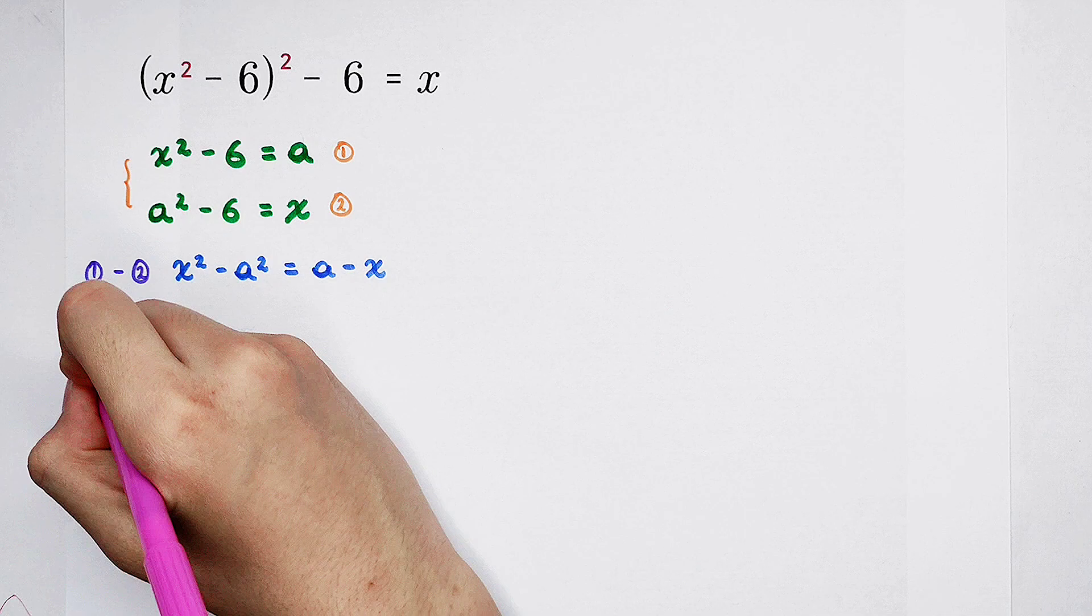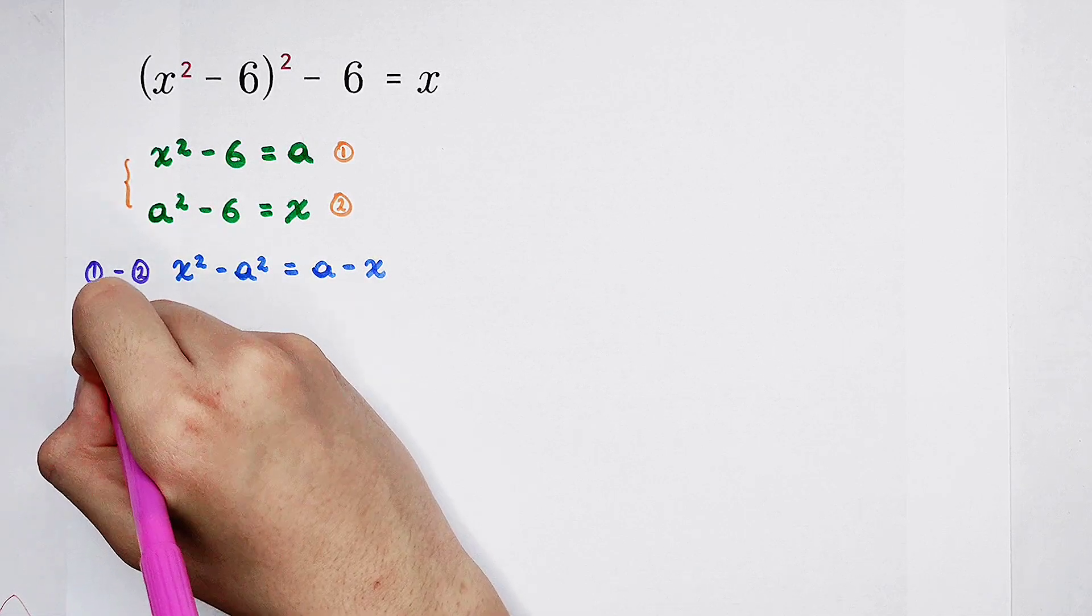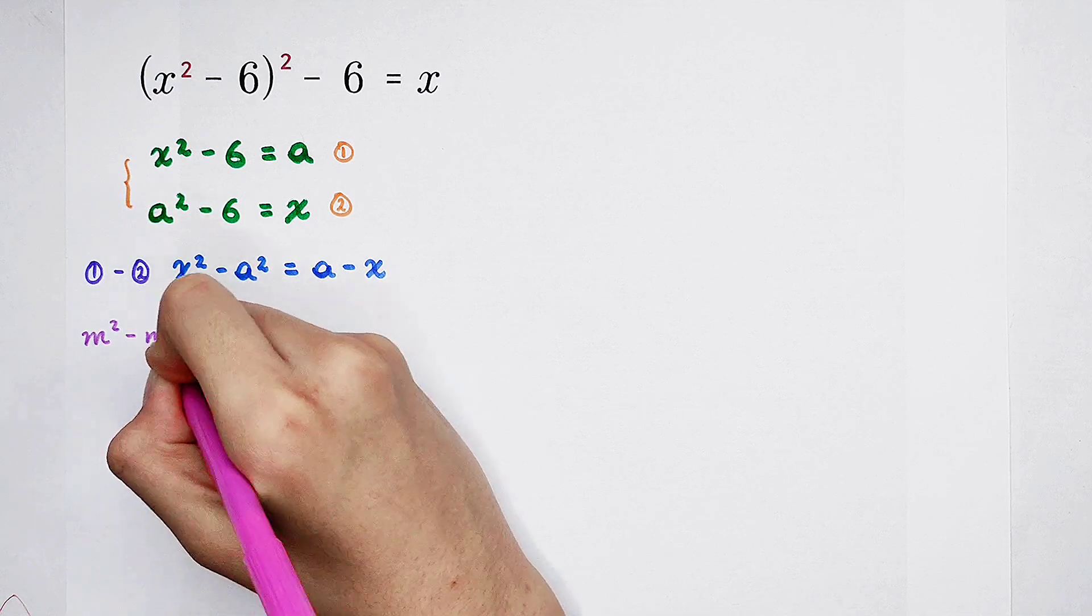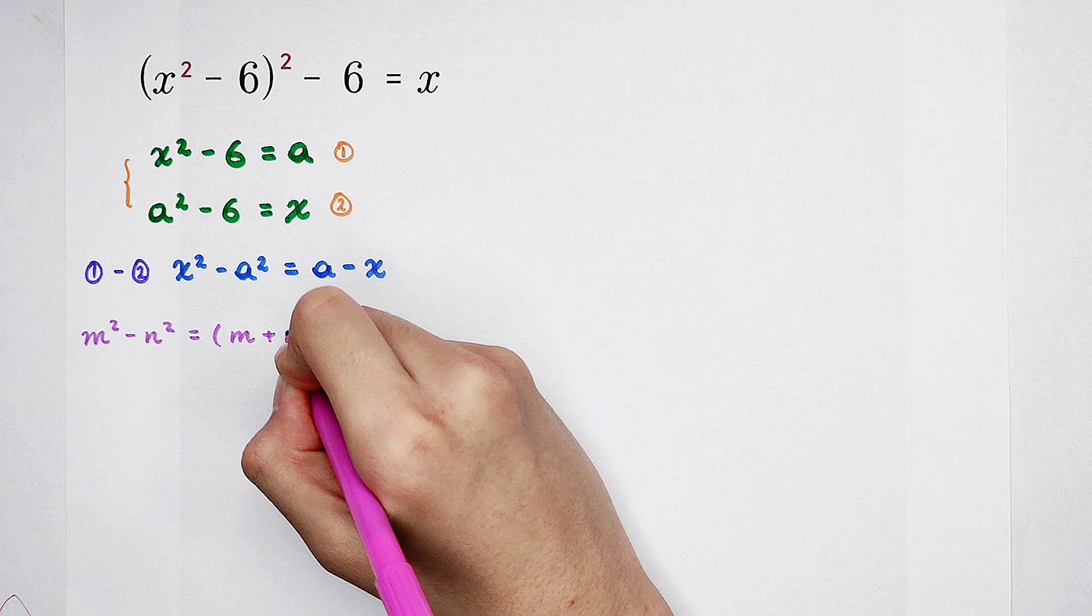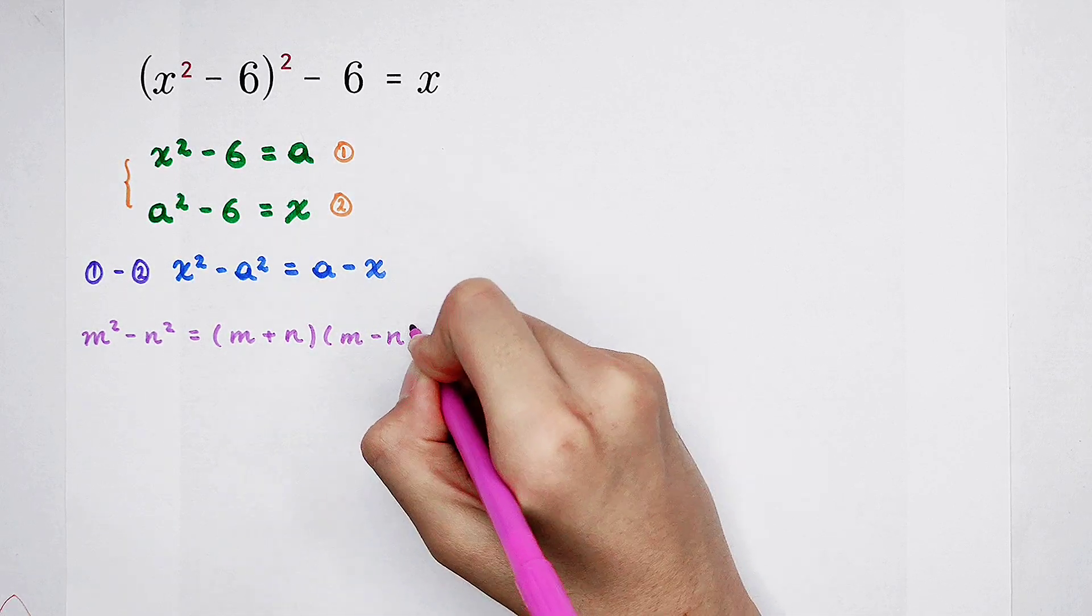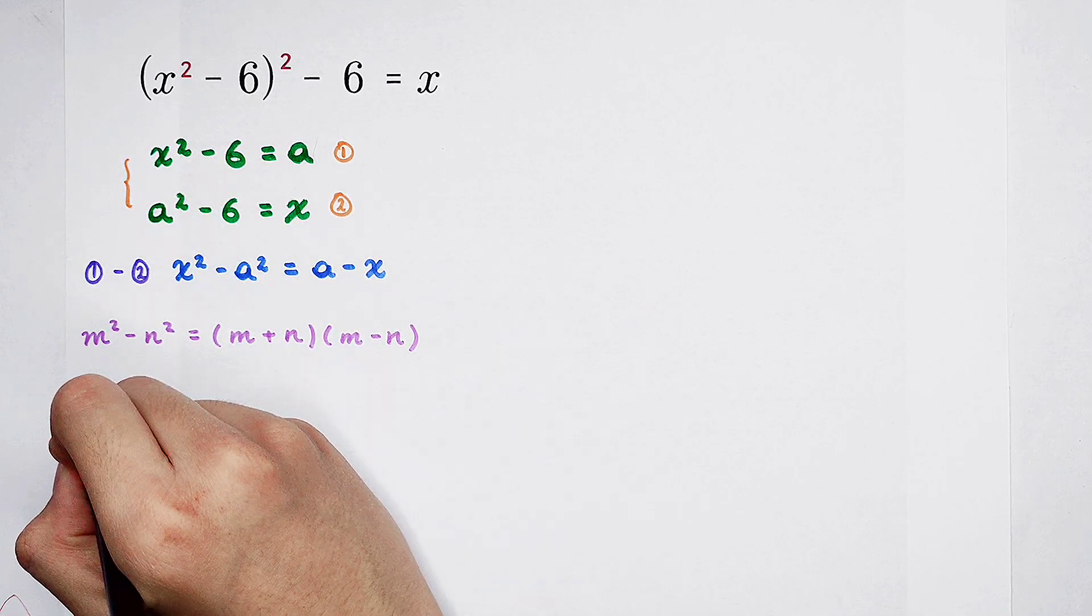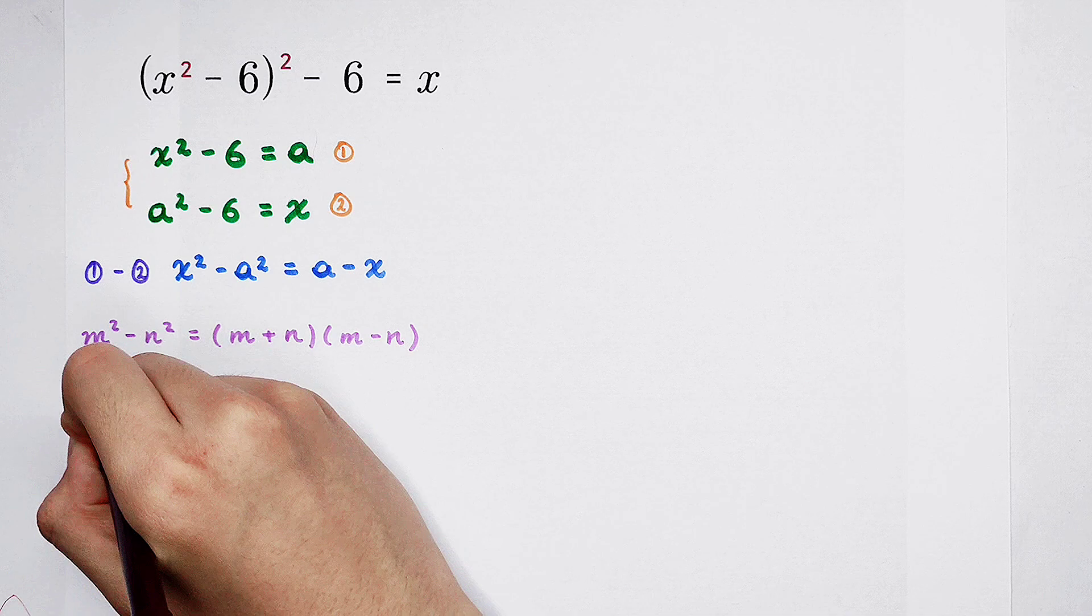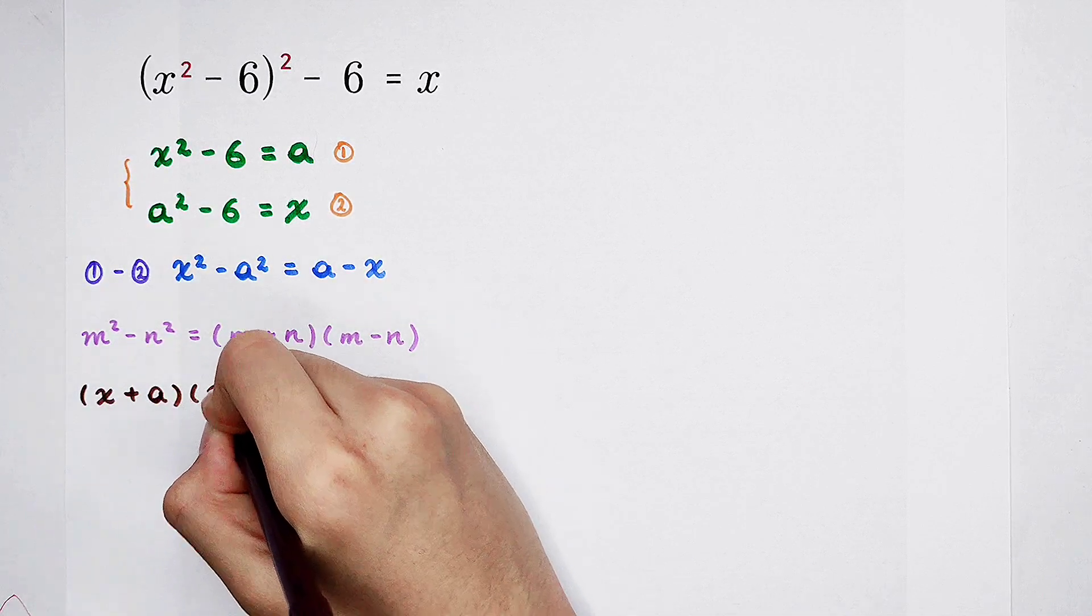So now we know that the formula, m squared minus n squared is equal to m plus n times m minus n. Here, of course, x squared minus a squared. It is x plus a times x minus a.